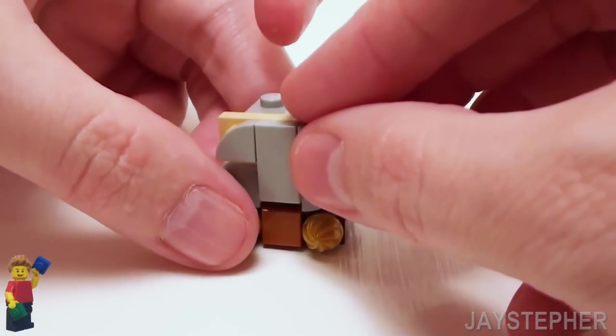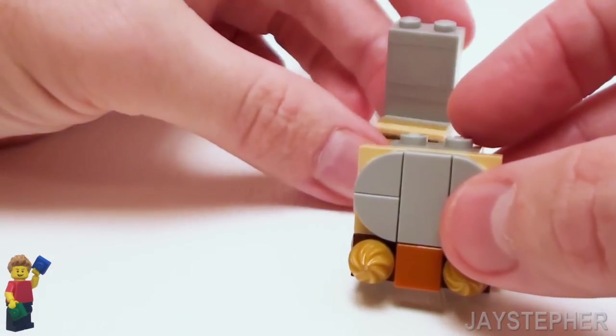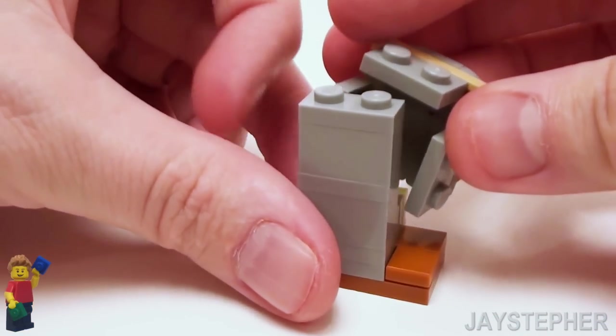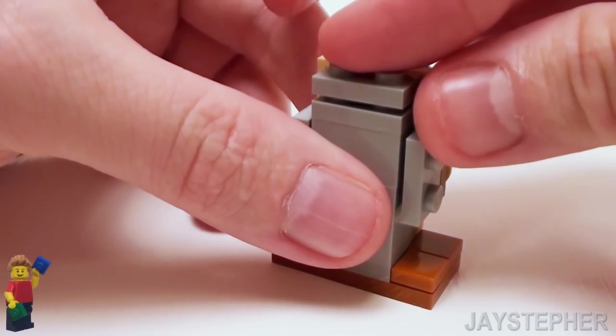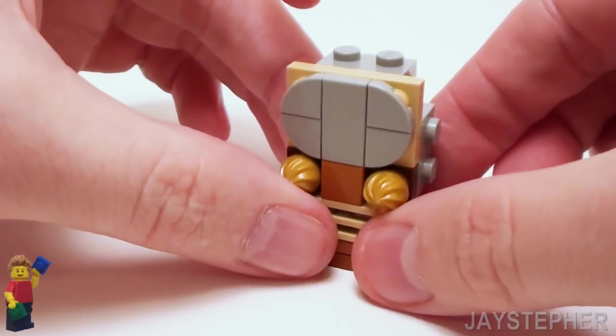Now we can put this assembly on the front, and we can set the angle plate on top of the 1 by 2 plate. Now we have a nice round screen for the television.